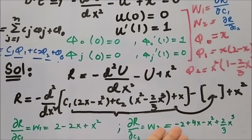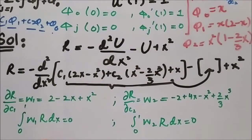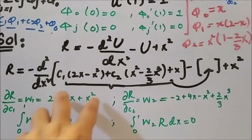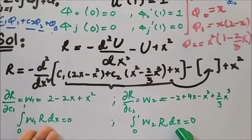The weighted integral statement is the integral of w1 times R dx from 0 to 1, and similarly for w2 — the integral of w2 times R dx from 0 to 1. If we plug all these values into the two integrals and evaluate them over the domain from 0 to 1, we obtain the resulting system of equations.